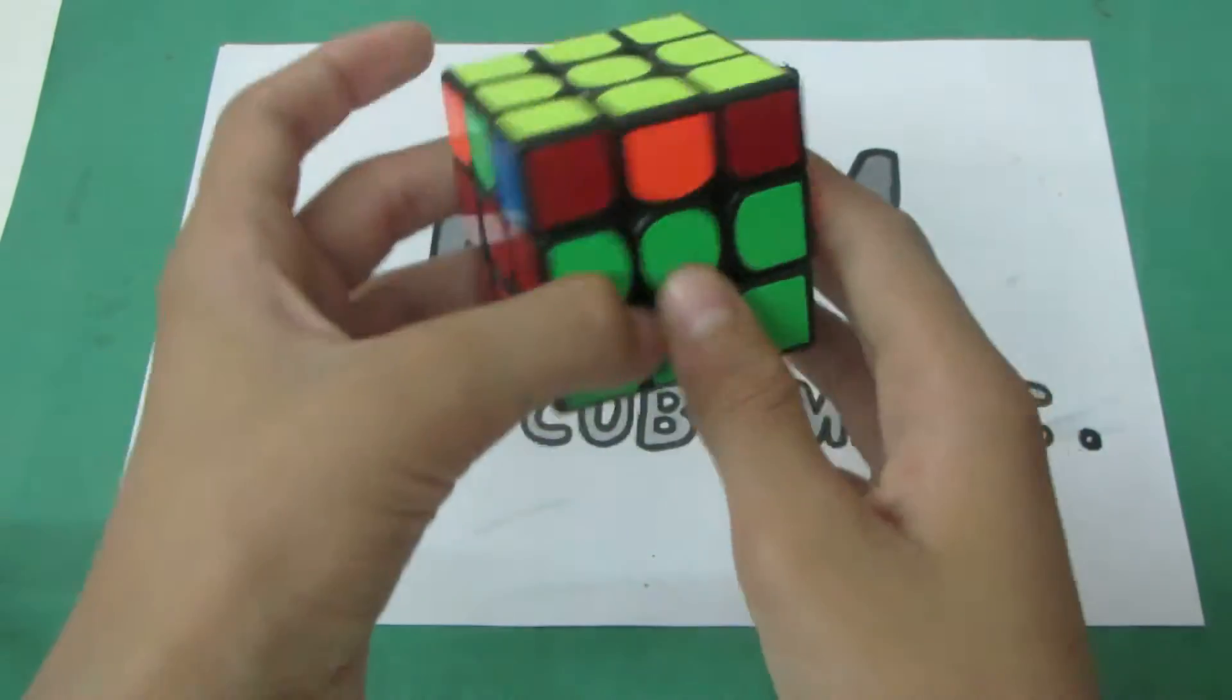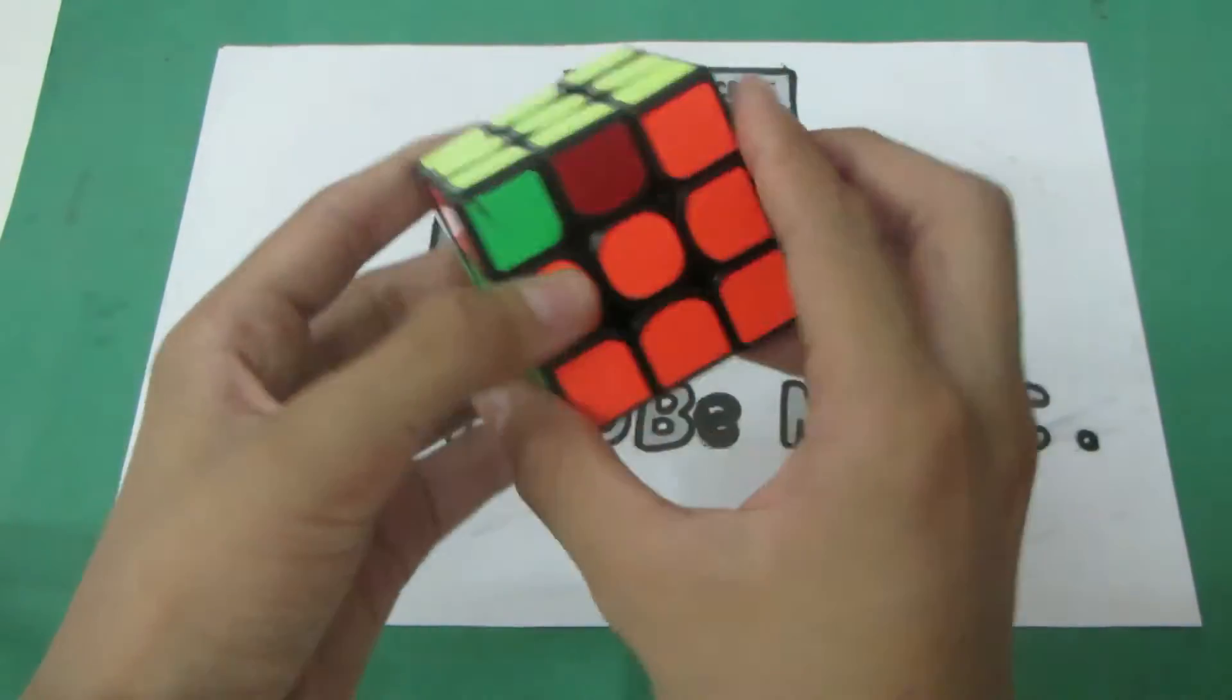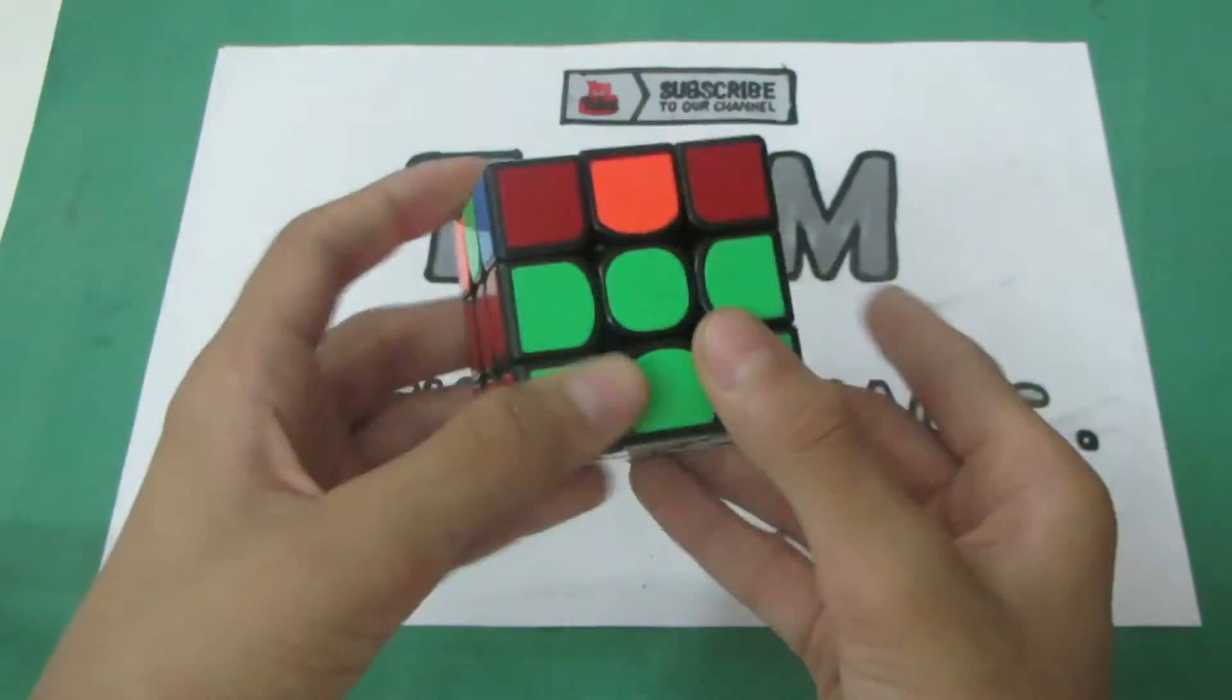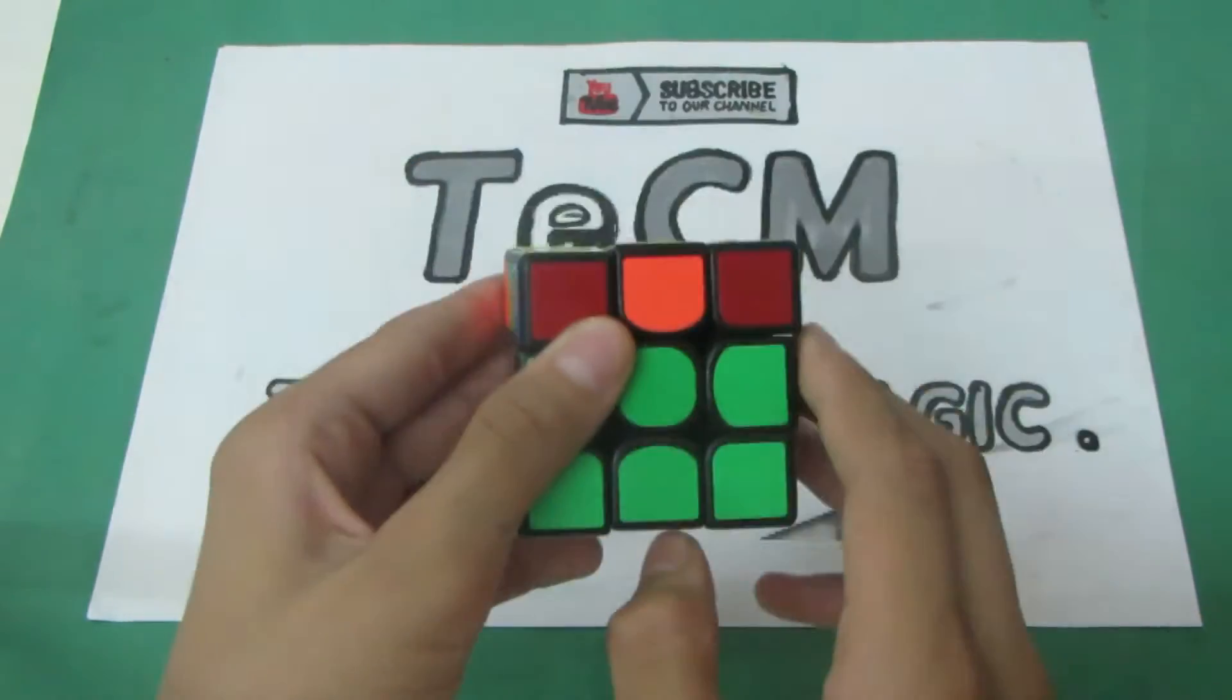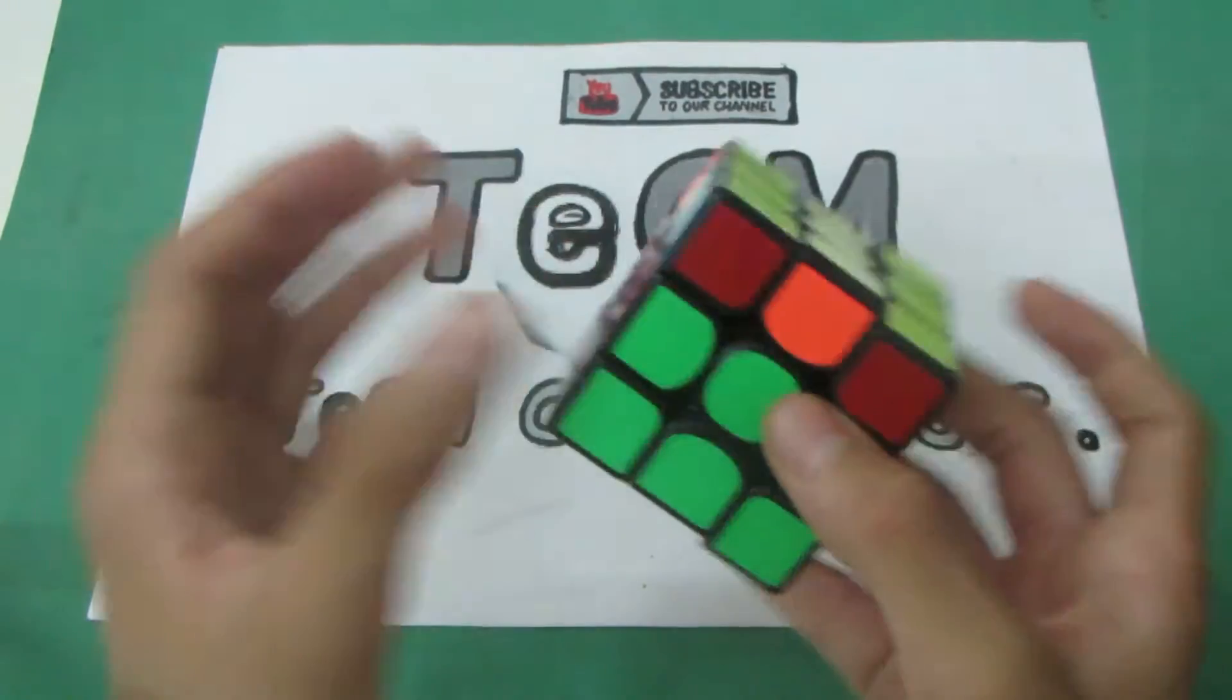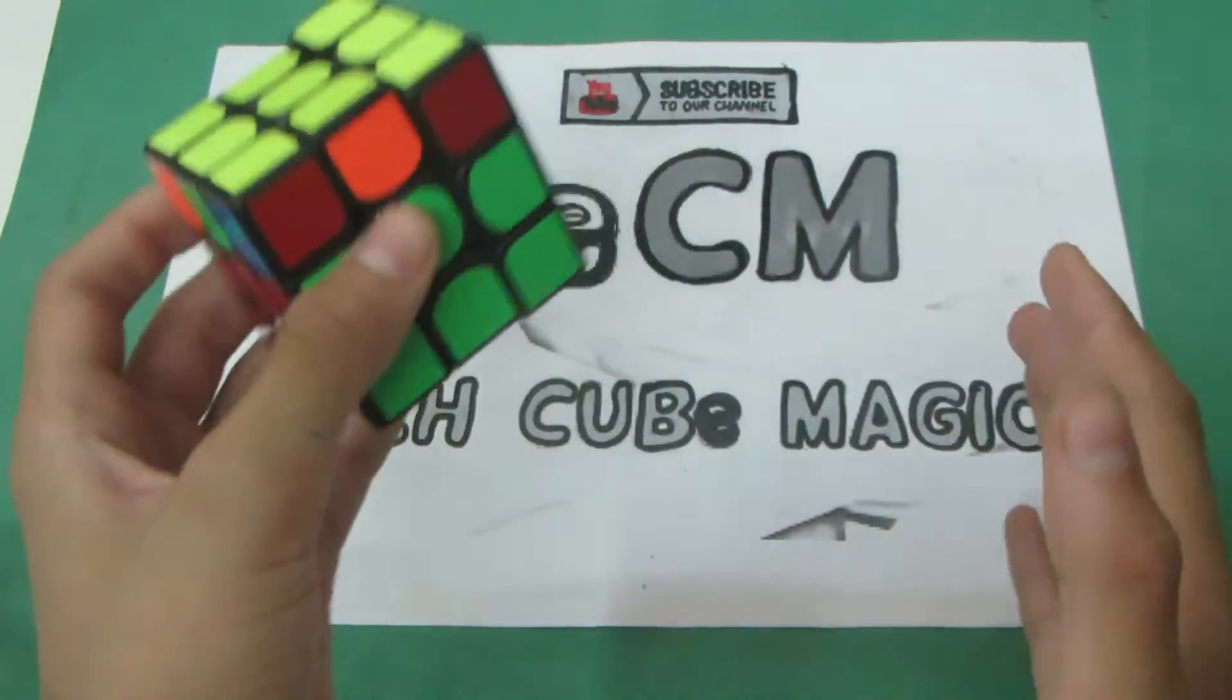Now what is Two-Look PLL? Two-Look PLL means permuting the last layer with just two algorithms. What that means is when you are done with all your layers and all your faces except the third layer, this third layer is solved by PLL. There are two types of PLL: the one-look PLL and the two-look PLL.